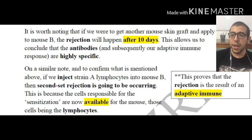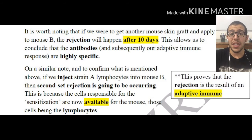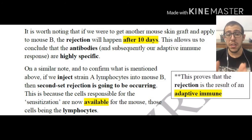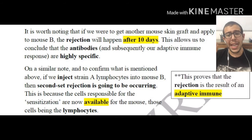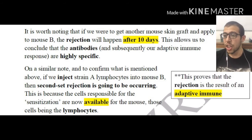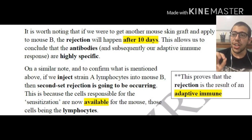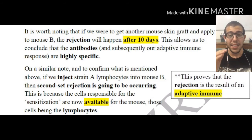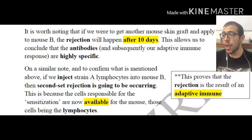On a similar note, to confirm what was mentioned above: if we inject strain A lymphocytes into mouse B, we just established that adaptive immune response triggers this rejection. By adaptive immune response we mean T lymphocytes and B lymphocytes — B cells and T cells. So if we inject these lymphocytes into mouse B, from the first time these cells are going to be rejected after three days. This proves that T lymphocytes are the ones inducing this reaction, as the cells responsible for sensitization are now directly available, thereby proving that the immune response induced is an adaptive immune response.